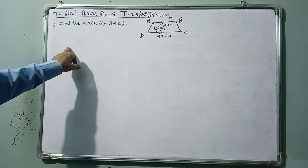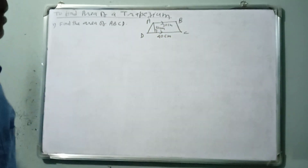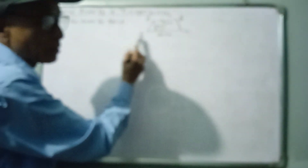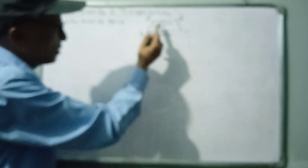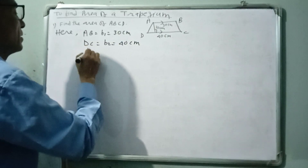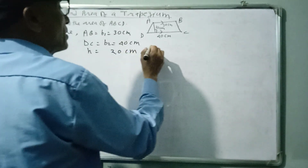Good evening, class 9 and 10 — this is also related to class 8. We are finding the area of a trapezium. A trapezium is a quadrilateral in which only two sides are parallel. Here ABCD is a trapezium where AB is parallel to DC. The given values are: AB (base 1, B1) = 30 cm, DC (base 2, B2) = 40 cm, and the height (perpendicular distance) = 20 cm.